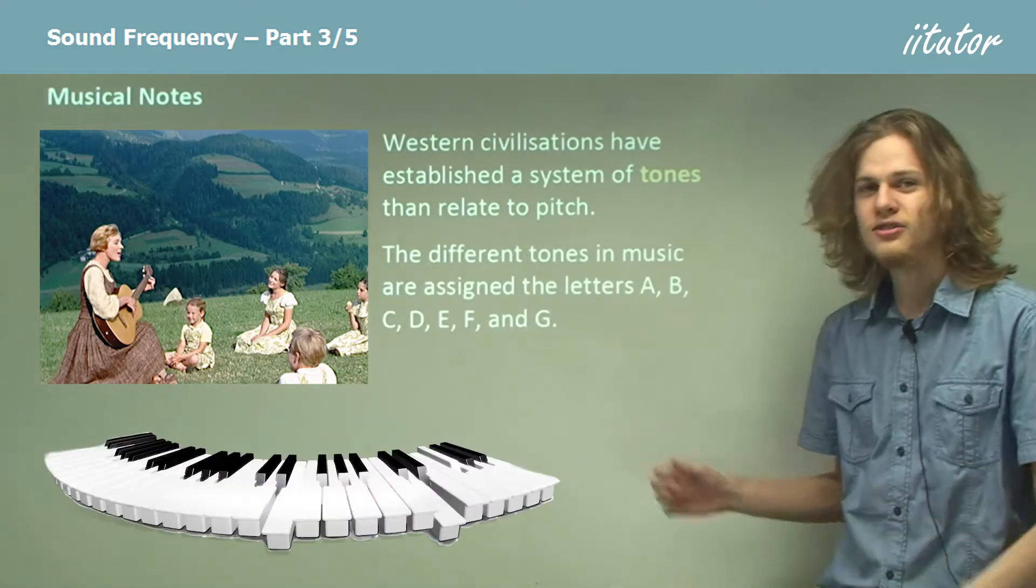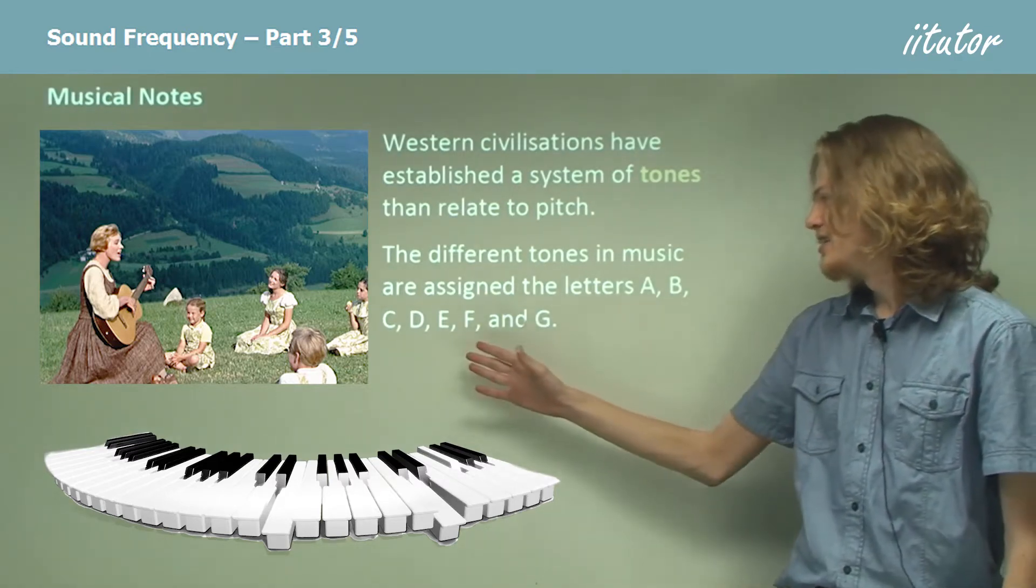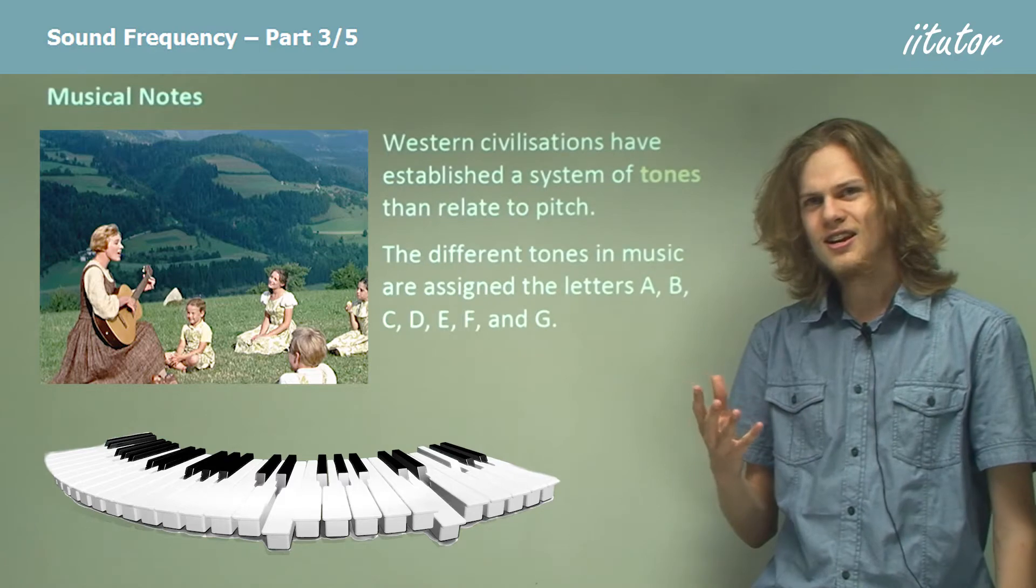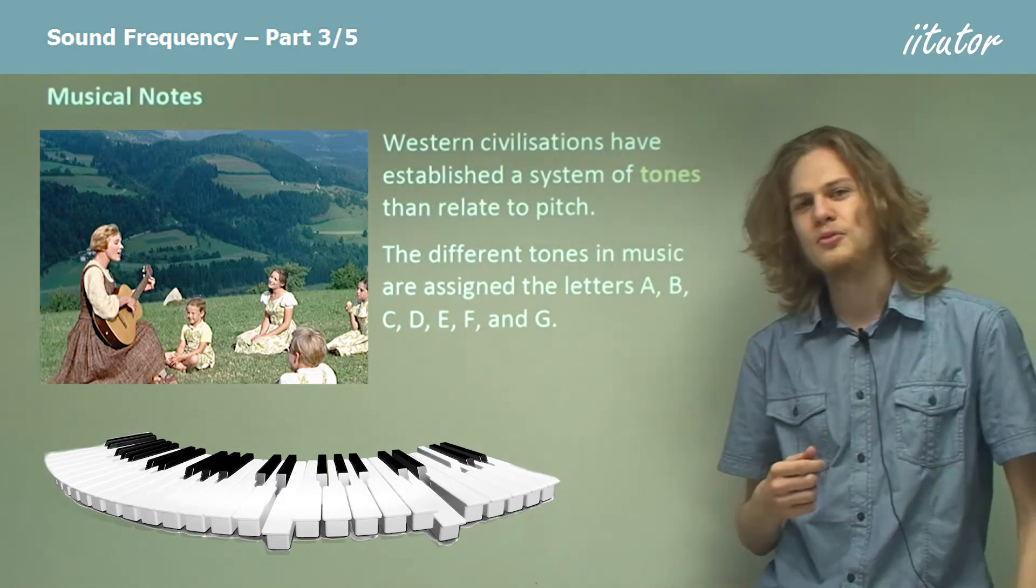So the different tones in music are assigned different letters: A, B, C, D, E, F, G, A, and of course these represent the different tones in a musical scale.